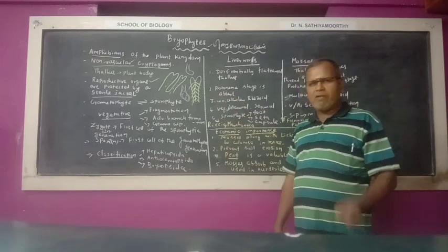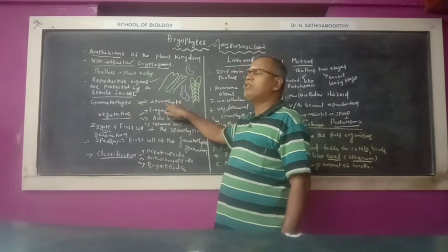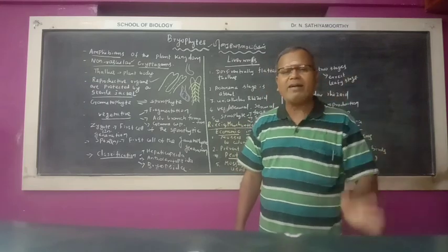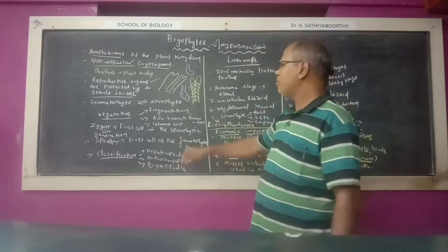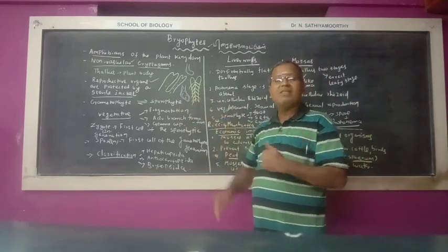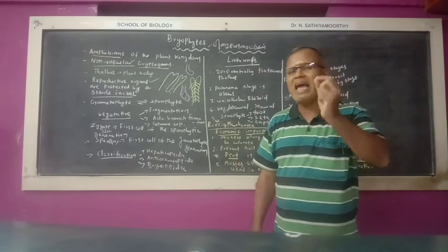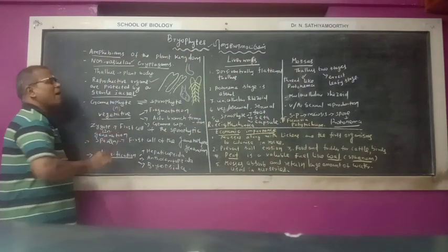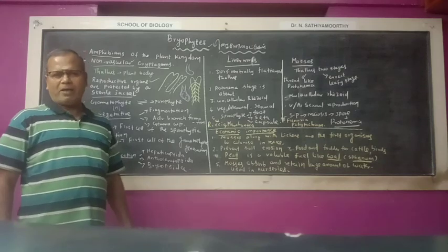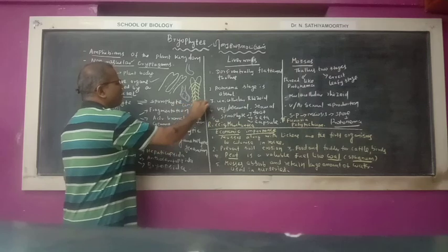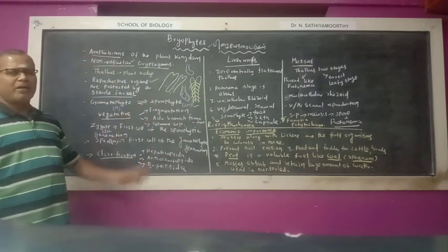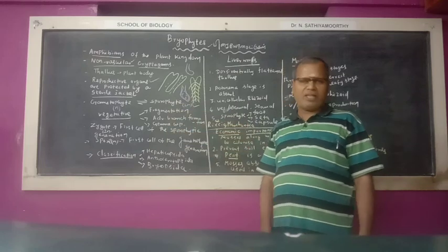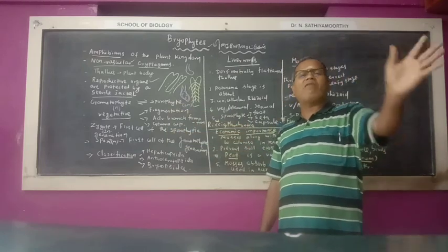In the life cycle of bryophytes, the haploid gametophytic phase alternates with the diploid sporophytic phase. A clear alternation of generation is seen. The gametophyte is the gamete-producing plant and is always haploid in nature. The spore-producing plant is said to be sporophyte, and it is always in a diploid condition. So a clear alternation of generation is seen.